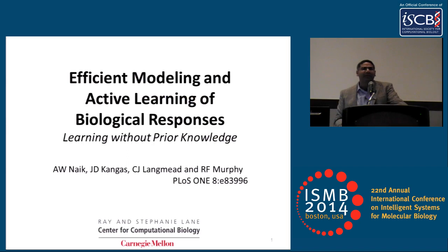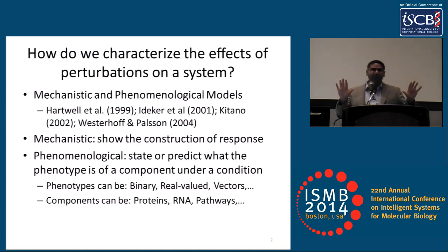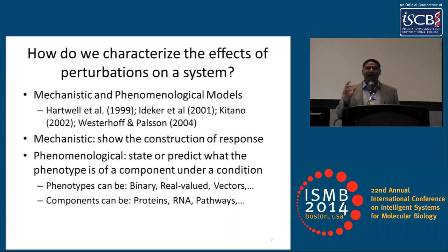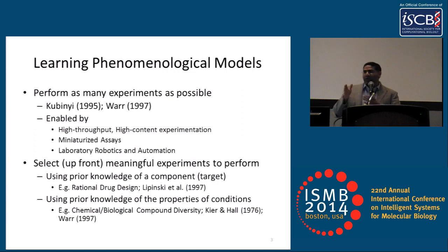A critical problem in systems biology is to characterize the effects of perturbations on a system. For this, we have essentially two approaches: we can either build mechanistic models or phenomenological models. For the latter, our efforts revolve around knowing what the phenotype of experiments are. To do this, we have a learning problem, and the most direct way to learn these systems is to perform as many experiments as you can — to try to do them all.